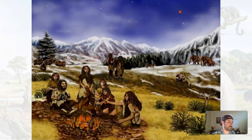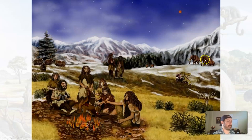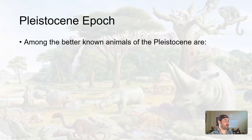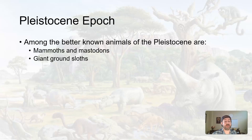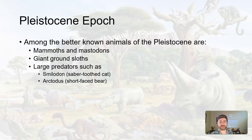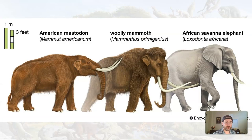We have huge hominids starting to appear, more Homo sapien-like. We still have some larger organisms but they're dying off — modern horses, saber-toothed cats, woolly mammoths. Among the better known animals of the Pleistocene during the ice ages are mammoths and mastodons, giant ground sloths, and large predators such as the Smilodon, the saber-toothed cat, and Arctodus, the short-faced bear.